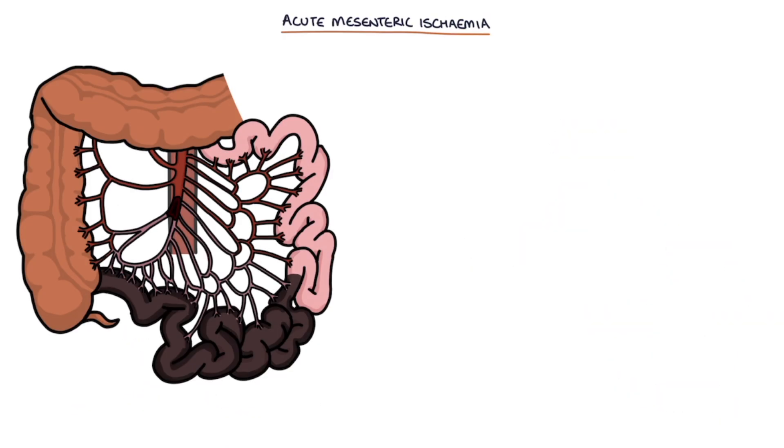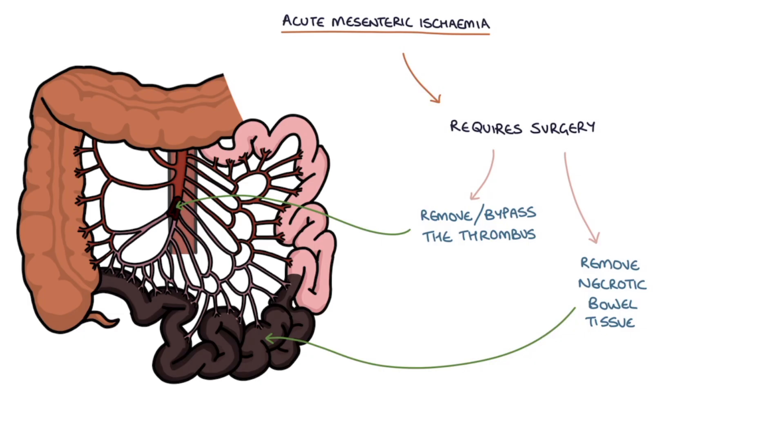Patients with acute mesenteric ischemia require surgery to achieve two objectives. The first is to remove any necrotic bowel tissue and the second is to remove or bypass the thrombus in the blood vessel and this can be done by open surgery or endovascular procedures. There is a very high mortality rate of over 50% in patients with acute mesenteric ischemia.